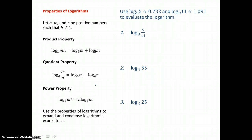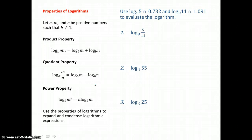In our first example, we're going to use log base 9 of 5, which is approximately 0.732, and log base 9 of 11, which is approximately 1.091, to evaluate the logarithm. In problem 1, our logarithm is log base 9 of 5 elevenths. Because we have the log of a quotient, we can use our quotient property and expand.